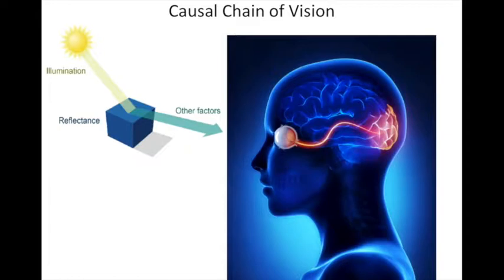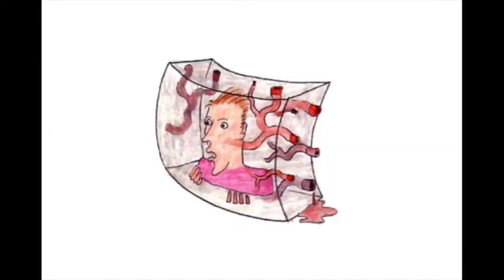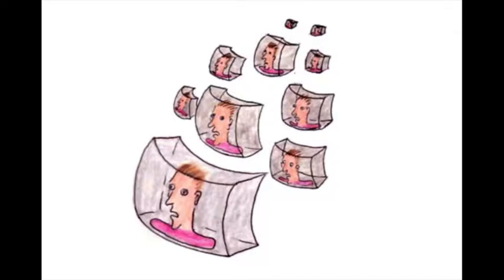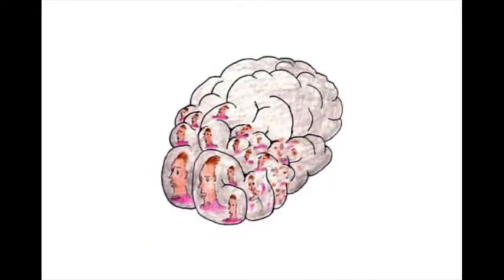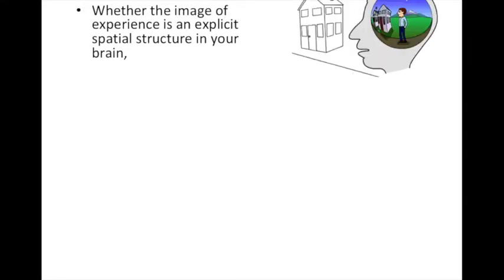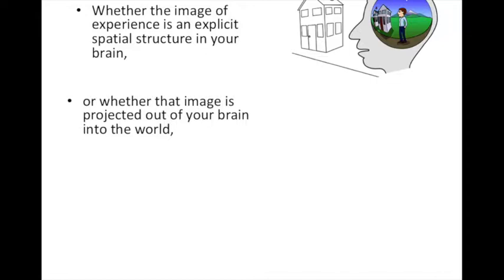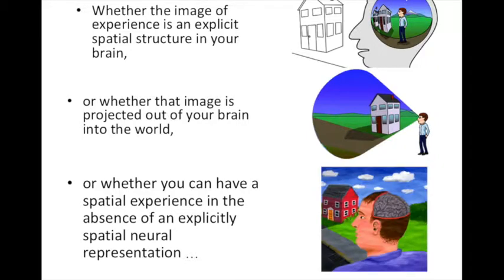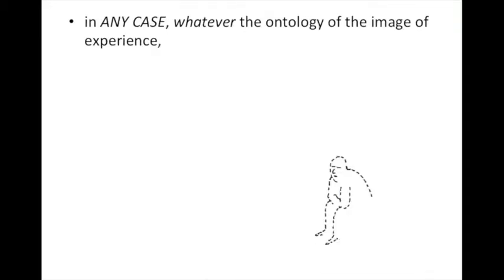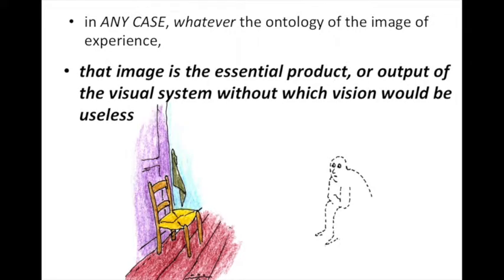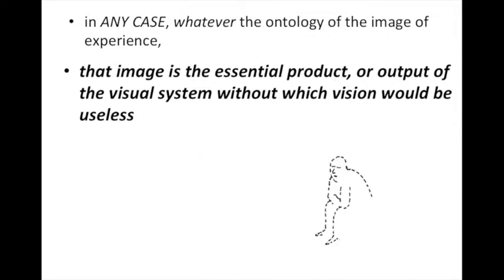If the properties of our experience are to be believed, there's a volumetric imaging system in our brain that creates volumetric images as rich and complex as what you see around you. And apparently it is separated into different cortical areas, and yet they all seem to share the same image—something that is only possible with a resonance representation. The properties of visual experience suggest an explicit image-like representation in our brain. Whatever the ontology of the image of experience, that image is the essential product or output of the visual system, without which vision would be useless.